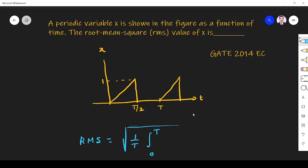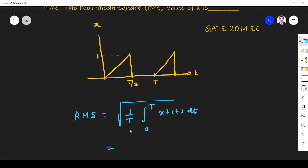So it is 0 to t. So x square t dt. We have to find this. So it is total time period. What is the total time period?